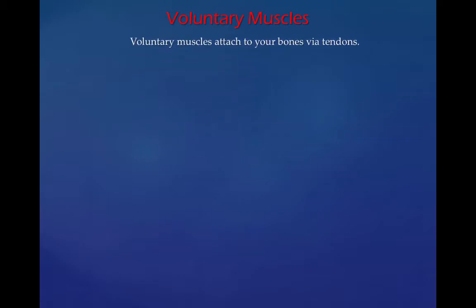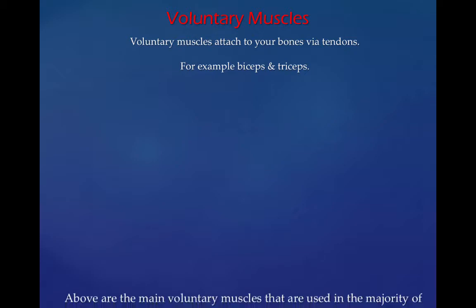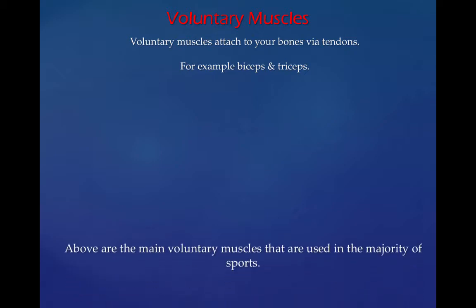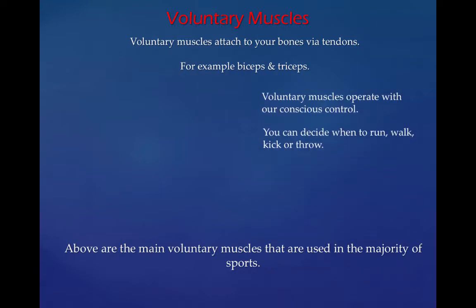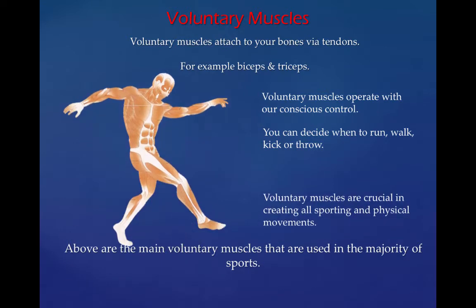Voluntary muscles are attached to your bones via tendons, for example your bicep and your tricep. Above are the main voluntary muscles that you need to know for the majority of sports. Voluntary muscles operate with our conscious control and you can decide when to run, walk, kick, or throw. Voluntary muscles are crucial in all sports and physical movements.